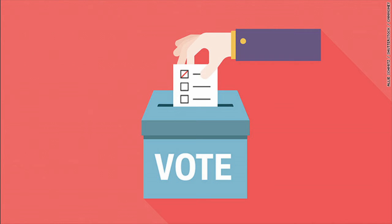Ways this can be done include bringing attention to the inequity surrounding school taxes and funding, attending school board meetings, attending town hall meetings, proposing legislation to local lawmakers, creating awareness, recognizing the issues, and constructively working together. Communities and local governments should be able to minimize and hopefully one day fully eliminate this inequity we face.